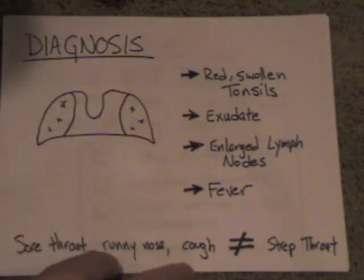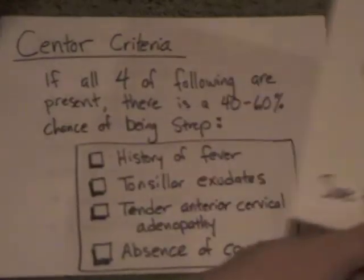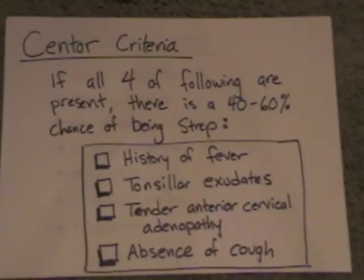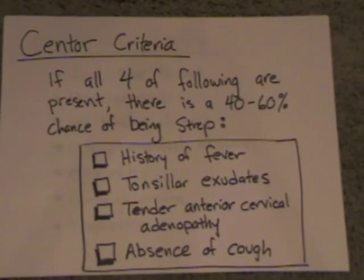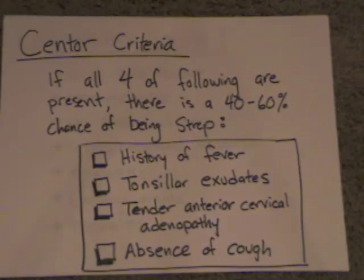If you've got other upper respiratory symptoms — coughing, sneezing, runny nose, sinus symptoms — then it makes it a lot less likely that it's going to be strep throat. There is a study that's been looked at a couple of times: when you apply these rules, you will diagnose strep throat in about 40% to 60% of cases — so roughly a 50-50 chance. If you have these four things, then you have at least a 50% chance of being right that it's strep throat.